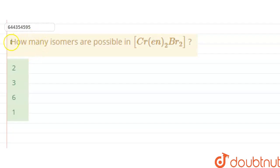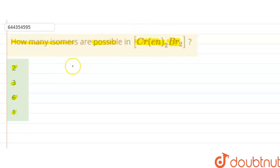Hello students. The question is: how many isomers are possible in chromium(en)₂Br₂? The options are 2, 3, 6, and 1. So in this question we have to find out the total isomers that are possible in this compound. The compound is [Cr(en)₂Br₂].